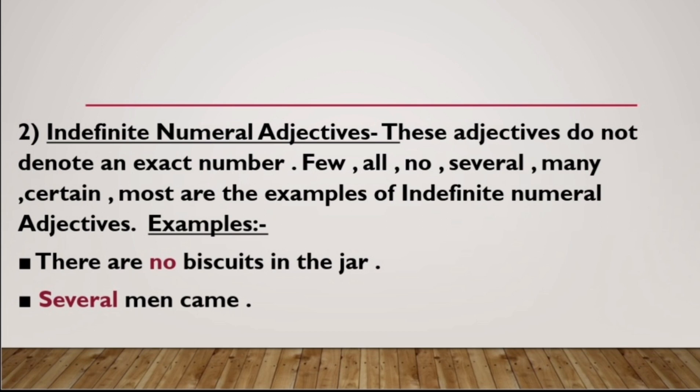The second and last type of numeral adjectives is indefinite numeral adjectives. These adjectives do not denote an exact number. They give a word that describes quantity but not an exact amount. Words like few, several, many, certain, and most are examples of indefinite numeral adjectives, because they do not denote a definite or exact number of the person or thing being talked about.